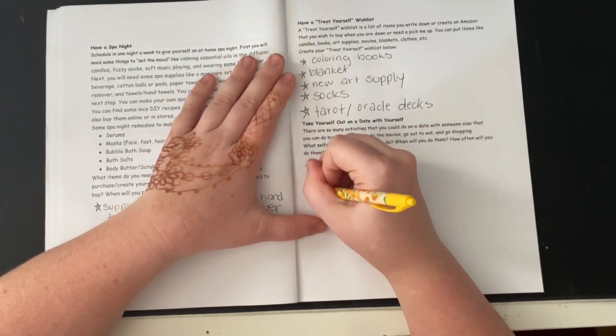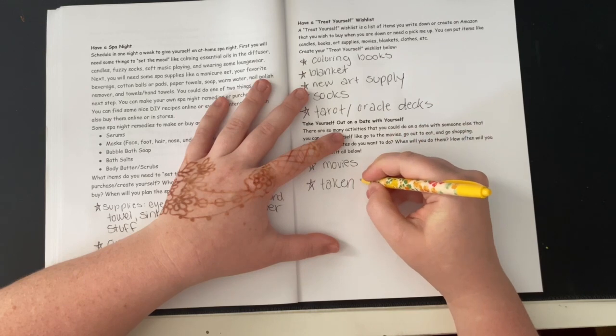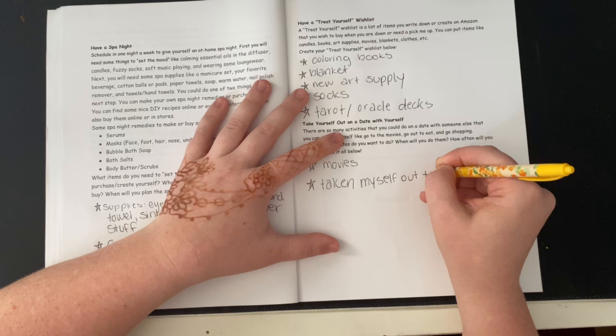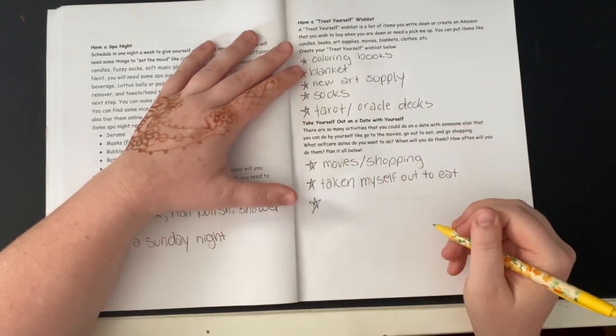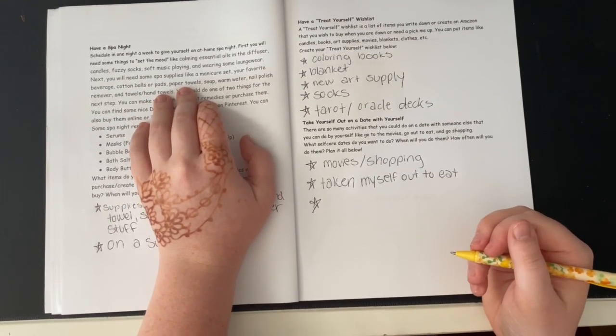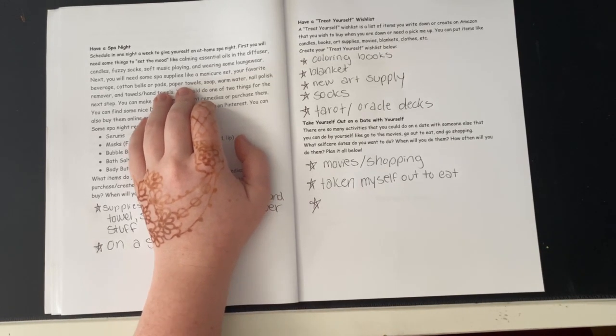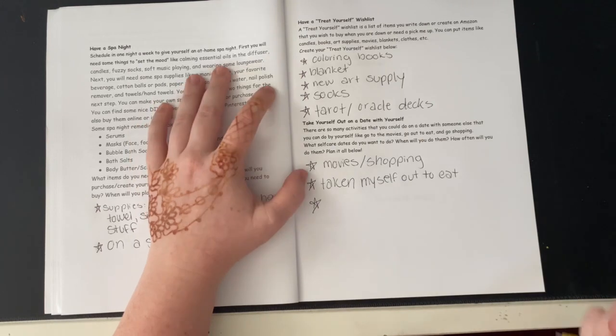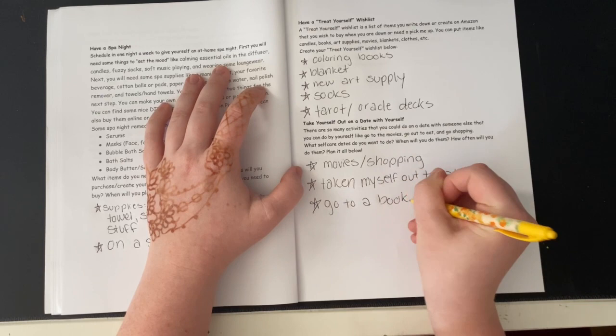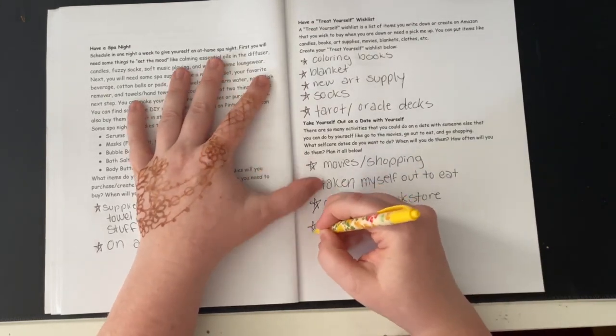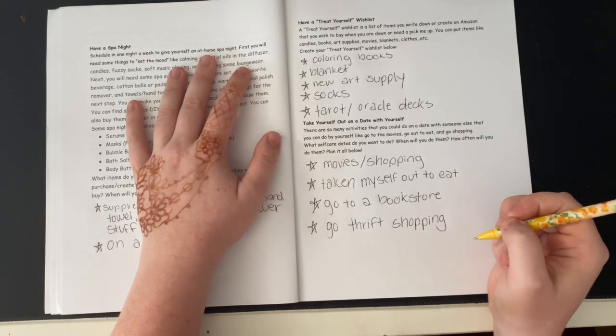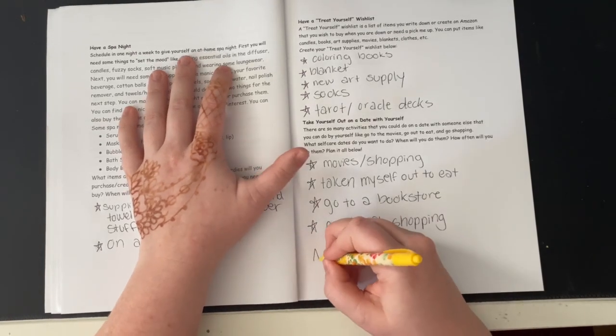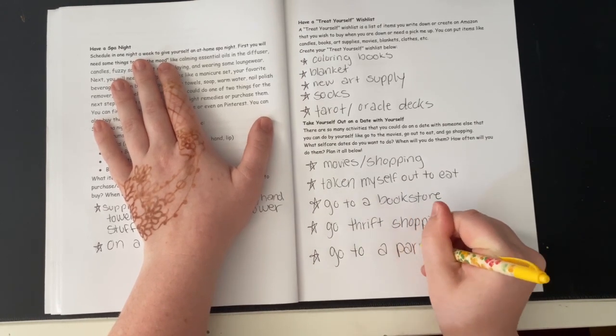So I've actually done this before. I've done the movies, I've taken myself out to lunch, movie or shopping. I could also take myself out for—trying to think what other ideas, because I've only really done take myself out to eat and shopping and movies before. Oh, I could go to a bookstore, go thrifting, go thrift shopping, and probably go to a park or something.